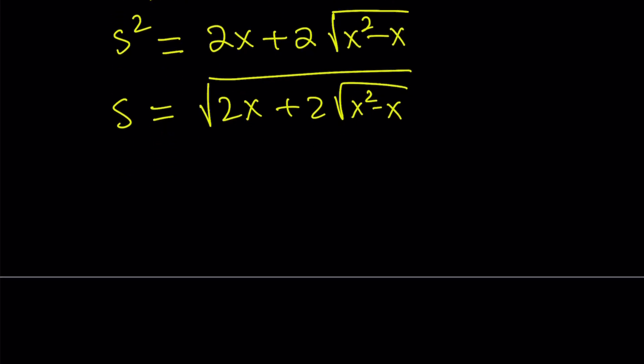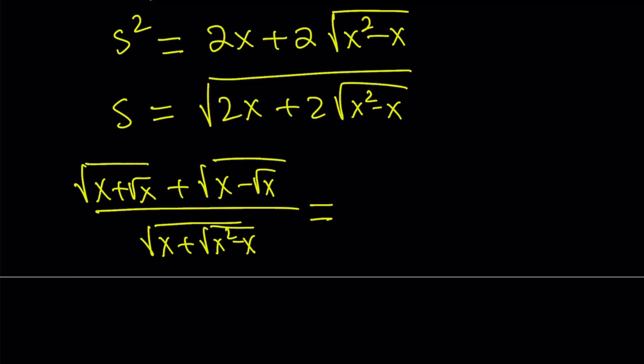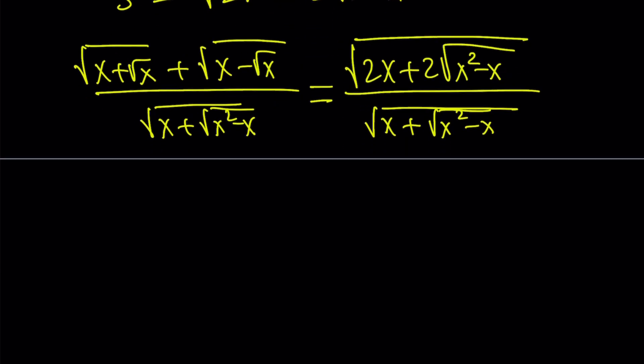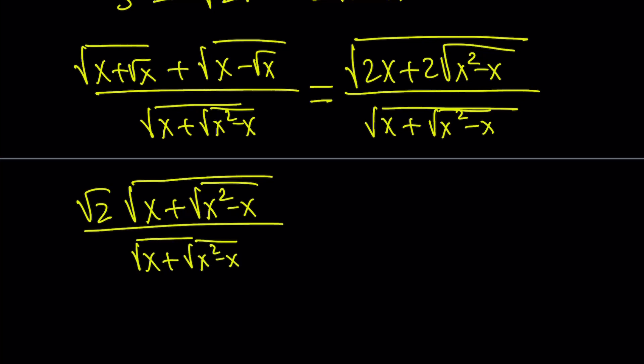And now, if I replace the numerator, remember, our original expression was square root of x plus square root of x, plus the square root of x minus square root of x, all over square root of x plus the square root of x squared minus x. Okay, now, I'm going to replace the numerator with this, and then simplify this expression. Now, notice that the numerator and denominator are now very similar. I'm going to take out a square root of 2 from here, and then I'm going to be getting x plus the square root of x squared minus x, and all of that is divided by pretty much the same thing, and from here, these two expressions cancel out, provided that they're not zero, and we end up with square root of 2 as our answer.